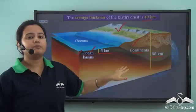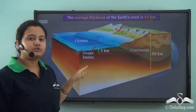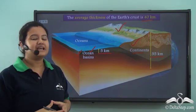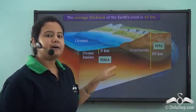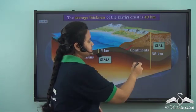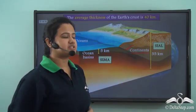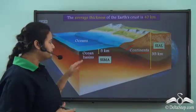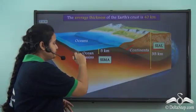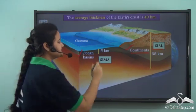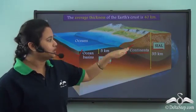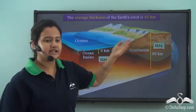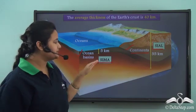The two parts of the crust — continents and oceans — have special names. The part of the Earth that is thicker below the continents, the continental crust, is known as Sial. The part below the oceans, the oceanic crust, is known as Sima.